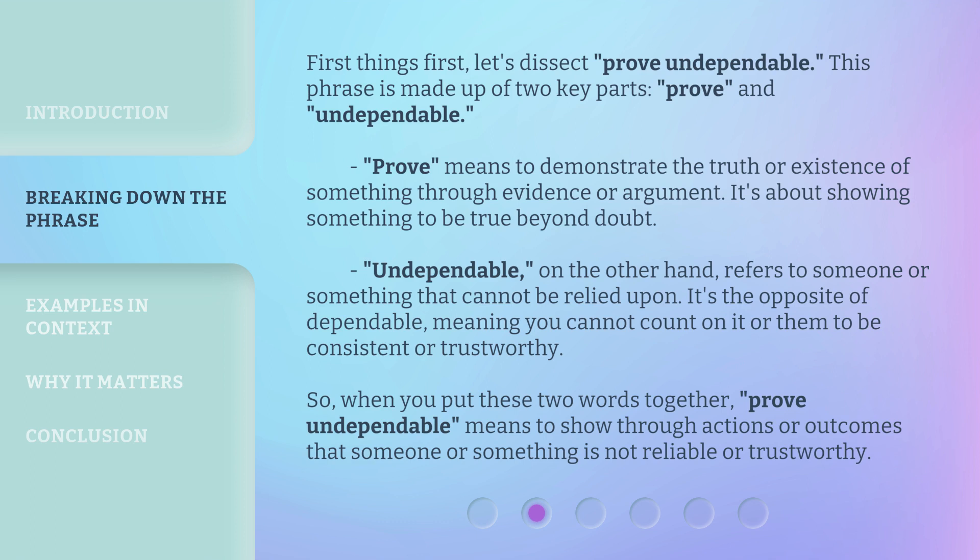First things first, let's dissect 'Prove Undependable.' This phrase is made up of two key parts: 'Prove' and 'Undependable.' Prove means to demonstrate the truth or existence of something through evidence or argument — it's about showing something to be true beyond doubt. Undependable, on the other hand, refers to someone or something that cannot be relied upon. It's the opposite of dependable, meaning you cannot count on it or them to be consistent or trustworthy.